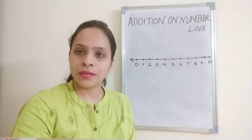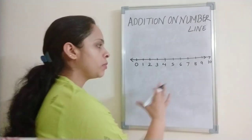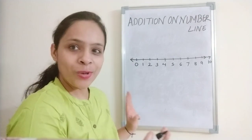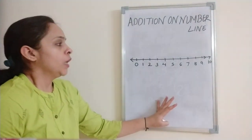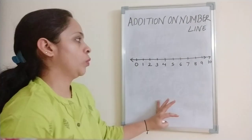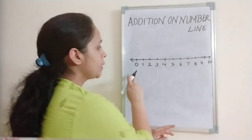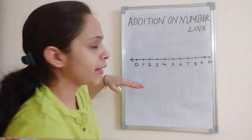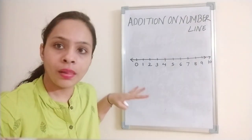Ten, twenty, thirty, fifty, hundred. Ma'am's board is small so I will write till ten. Okay? We have written numbers on this line, and what do we call this line? Number line.